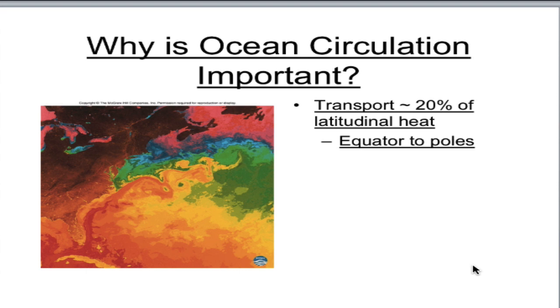Ocean currents are constantly trying to move excess amounts of energy, which means high temperature water, to areas of low energy. Again, that means low temperature water. And that's really it. Ocean currents are trying to balance out Earth's energy.